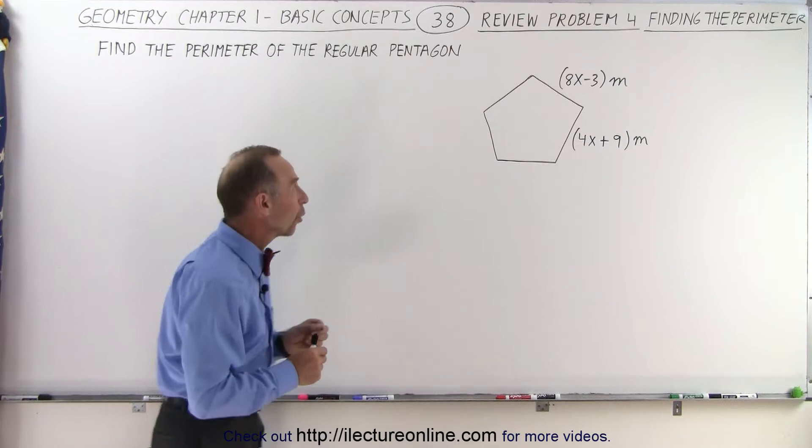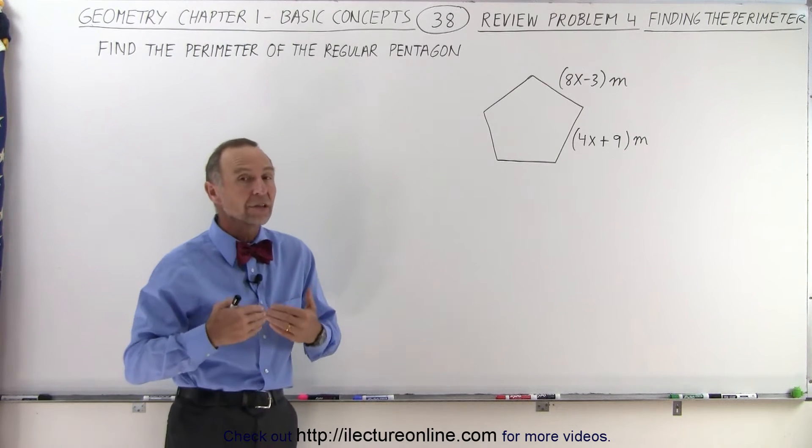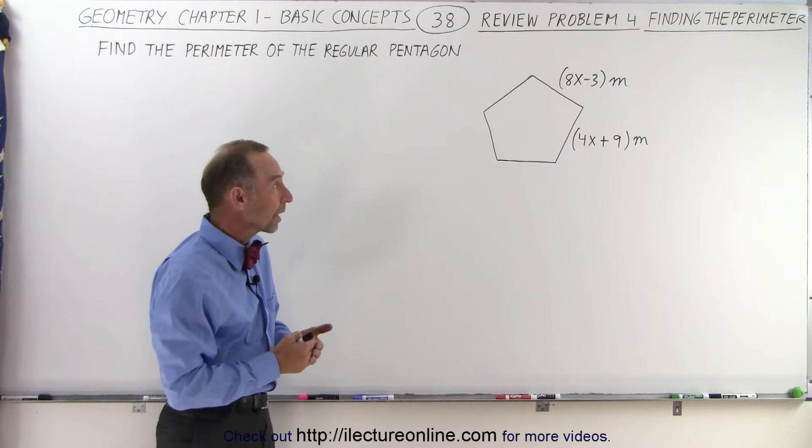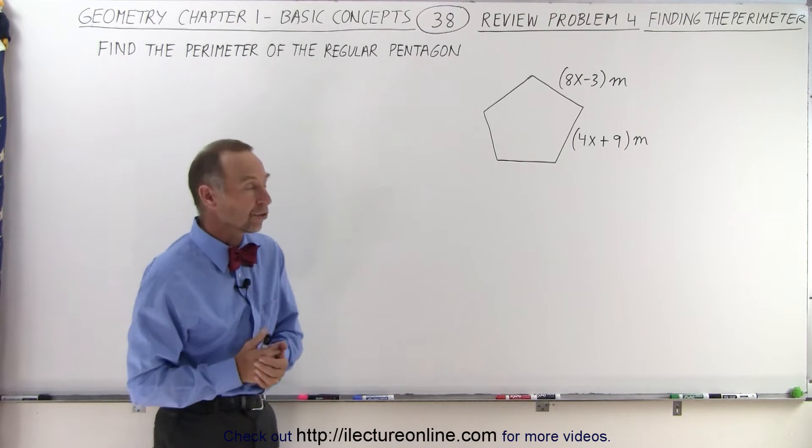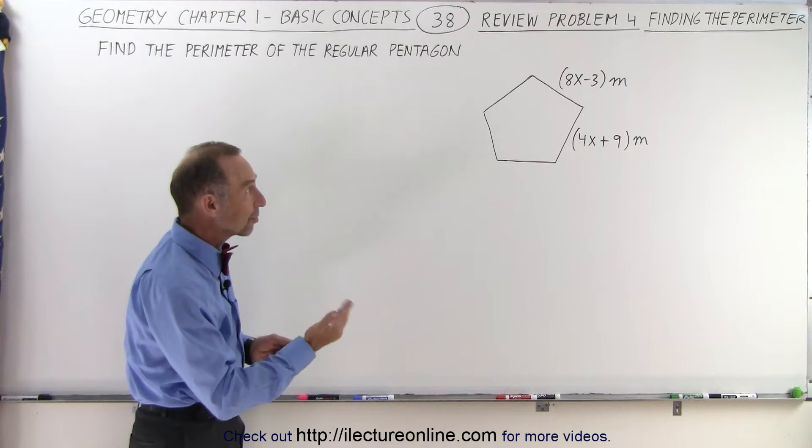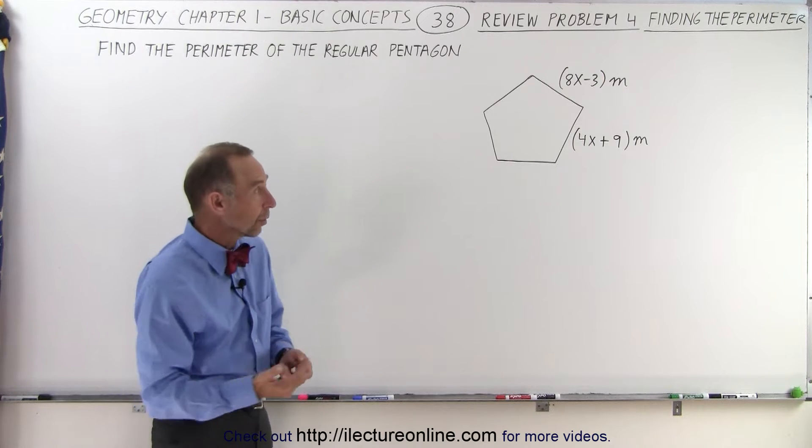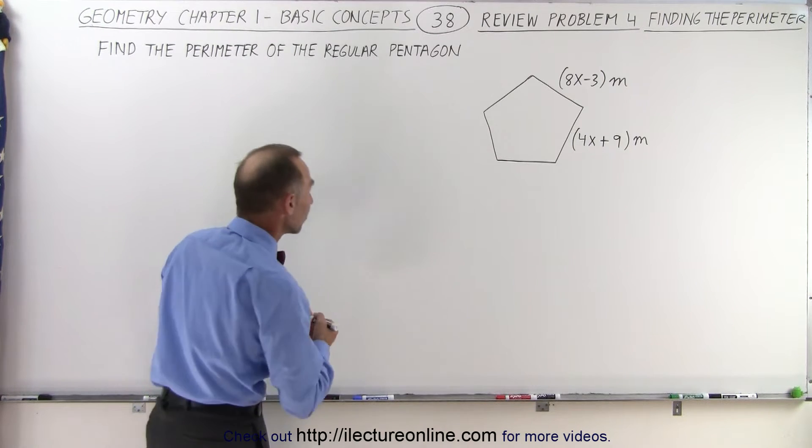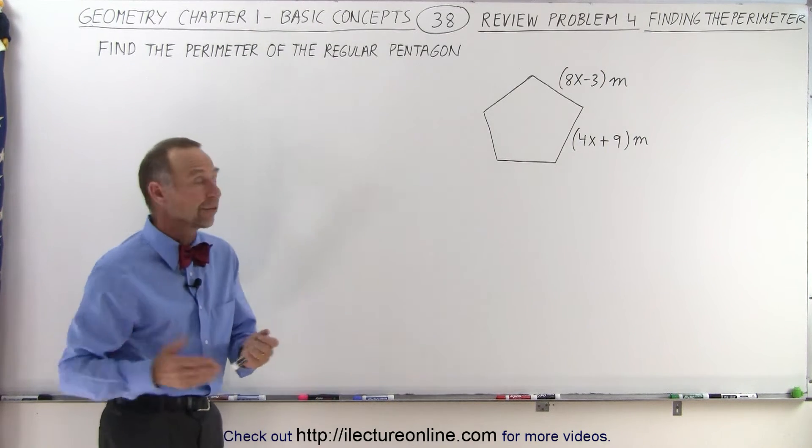Since it's a regular pentagon, all sides are equal in length and all angles are equal in measure. This means 8x minus 3 meters must equal 4x plus 9 meters, allowing us to find the value for x.